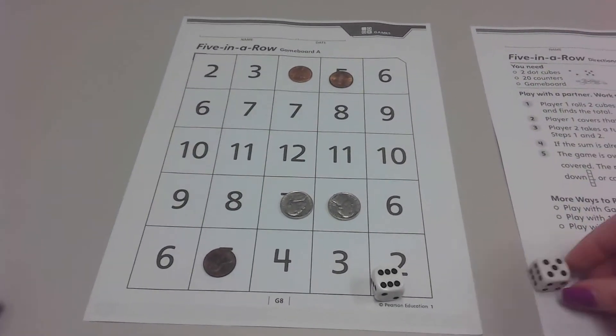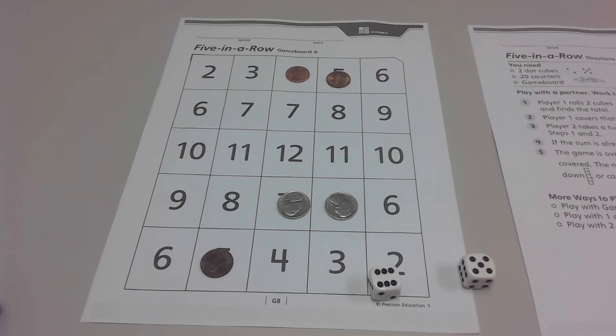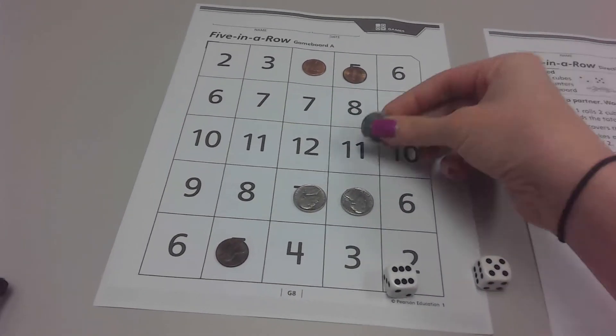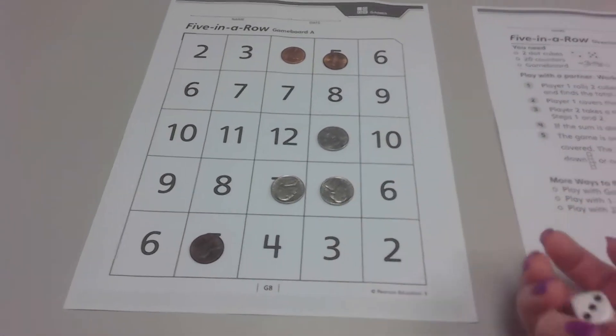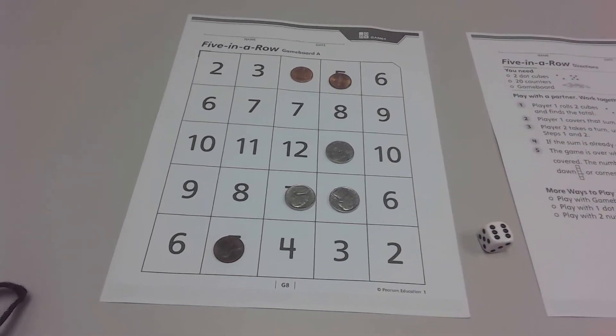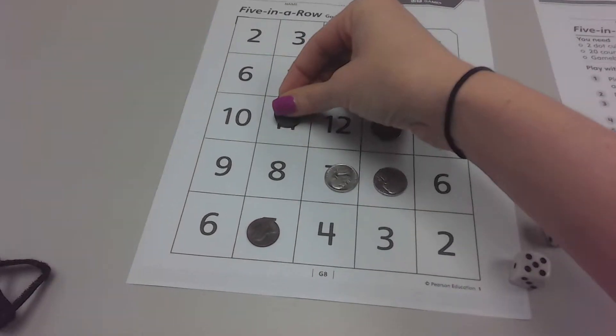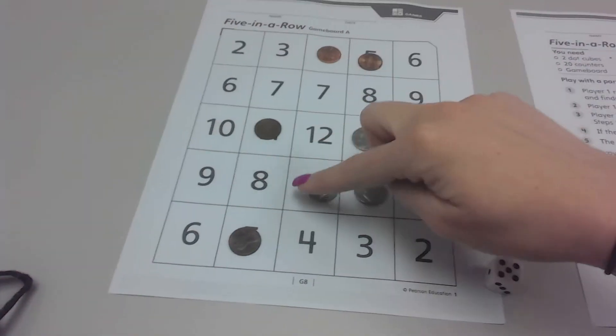They got six and five. Ooh, an eleven. All right, let's go one more time. Six and a five. Now they have an eleven. There's a block, but also working on a five in a row up here.